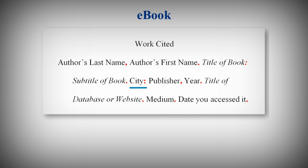Then enter the city of publication, followed by a colon. There is no need to include the state or province. Then the publisher's name, followed by a comma, and the year of publication, followed by a period.